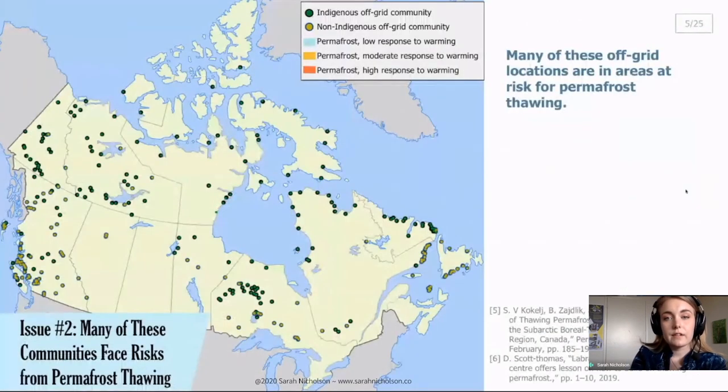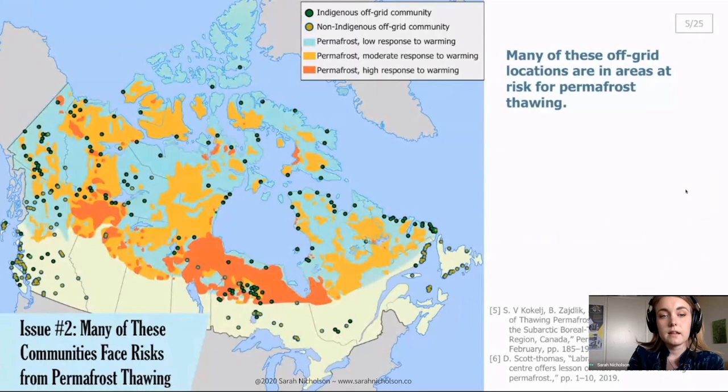Looking at this graph again, most of these communities are also at places where the permafrost has a high response to warming. So shown here in orange and red, these locations are most likely to melt first if there are changes to the ambient air temperature.